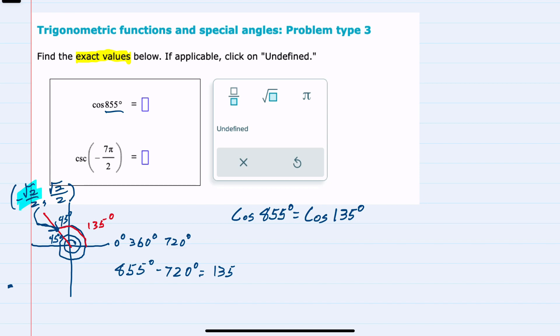With this being our cosine and this being our sine, we can see that the cosine has the exact value of negative square root of 2 over 2. So this is the first question.